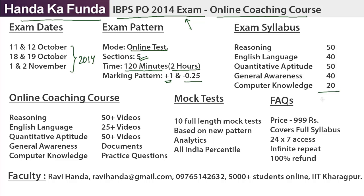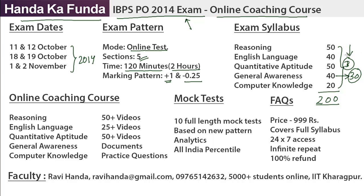The paper will have a total of 200 questions distributed as follows — this is already declared, no speculation. Reasoning will have 50 questions, English slightly less at 40, Quantitative Aptitude will have 50 questions, General Awareness will have 40 questions, and out of those 40, there will be 30 questions on banking only. So keep that in mind — only 10 questions will deal with other topics, but 30 out of 40 will be on banking awareness.